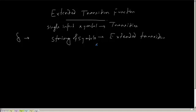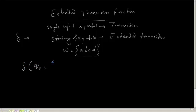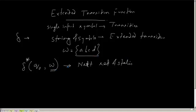Extended transition function is different from a normal transition function in the sense that in a normal transition function, I will only process a single input symbol and decide what will be my next state. But extended transition function will be provided with a current state and an entire string of symbols - that is W. It can be A, B, C, D like this - four symbols at a time. Given a current state and the entire string W, I need to find out what will be my next state. After processing the entire string W, I will decide what will be my next state.